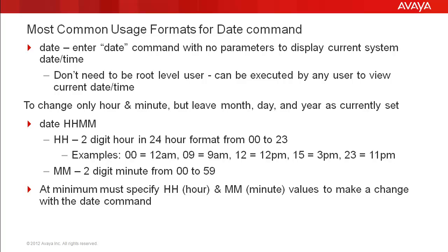If you want to change only the hour and minute but leave the month, day, and year alone, then type the date command followed by a two-digit hour and two-digit minute. The two-digit hour parameter is in 24-hour format; valid values are 00 to 23, with 00 being 12 a.m., 12 being 12 p.m., up to 23 for 11 p.m. The two-digit minute can be from 00 to 59. At minimum, you must specify hour and minute values to make a change with the date command. This format is typically used for daylight savings time or if the system time was only slightly incorrect.